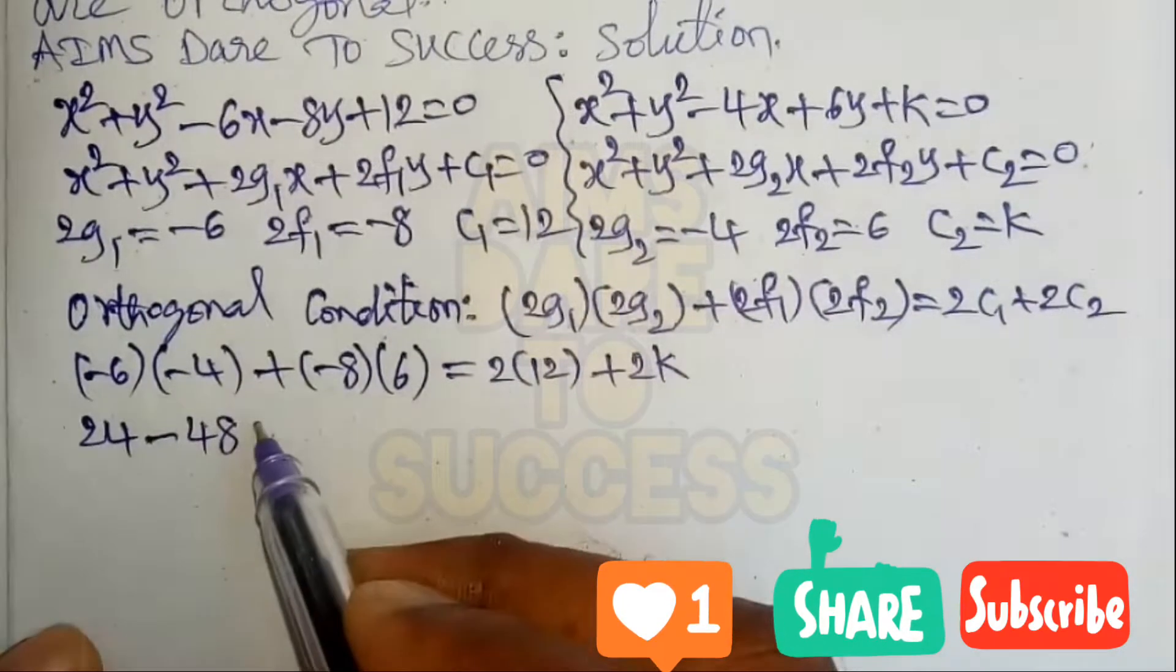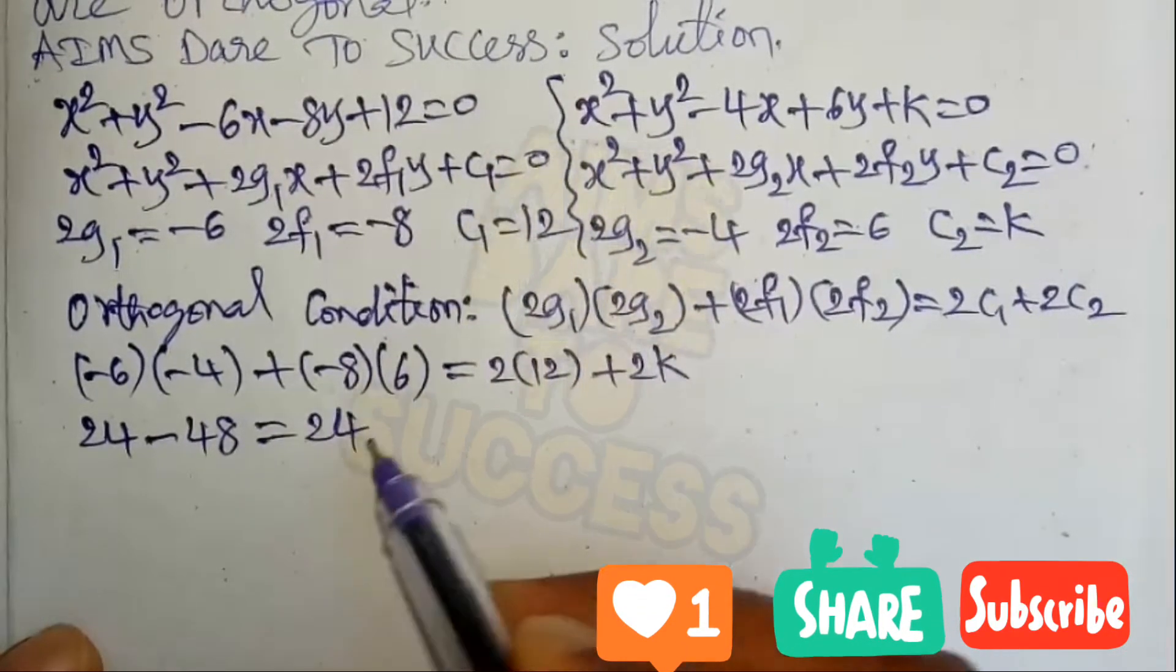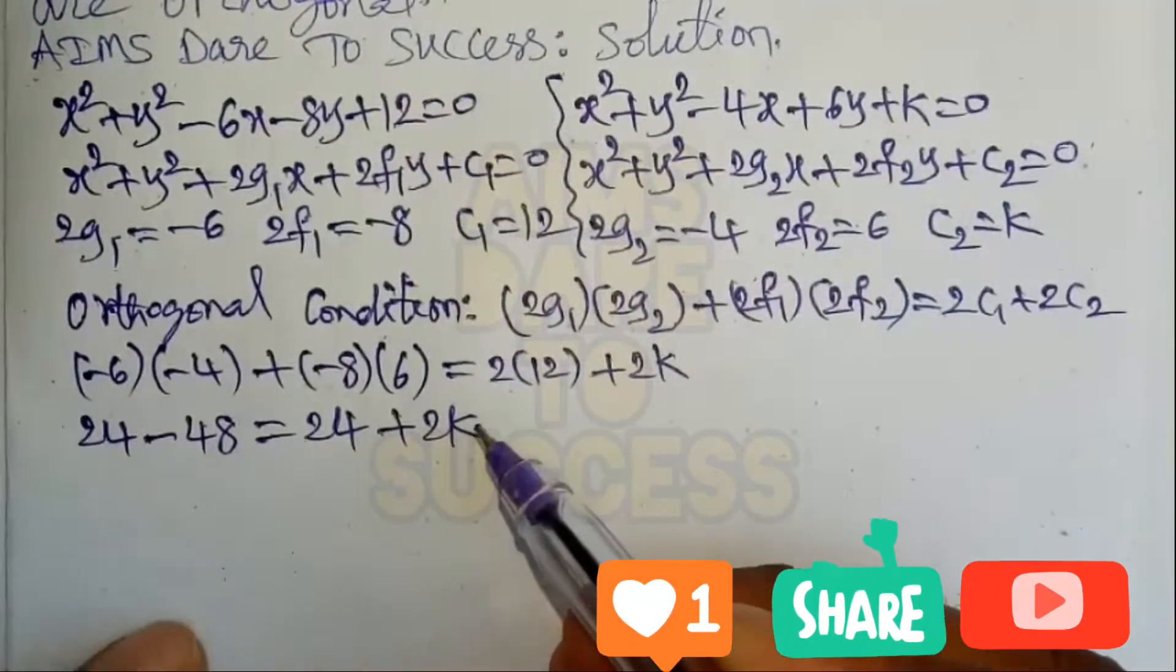Minus into minus gives plus: 6 times 4 is 24. Plus into minus gives minus: 8 times 6 is 48. So we have 24 - 48 equals...